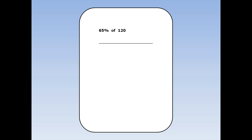Find 65% of 120. First, we find 10%. To find 10% we divide by 10. 120 divided by 10 is 12. Next, we find 60%. That's 10% times 6. 10% is 12. 12 times 6 is 72.